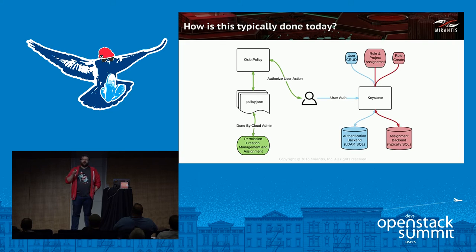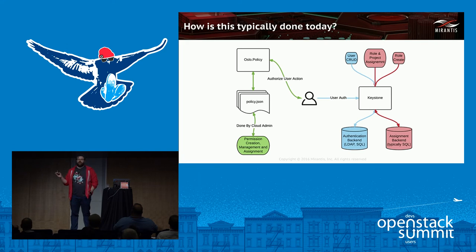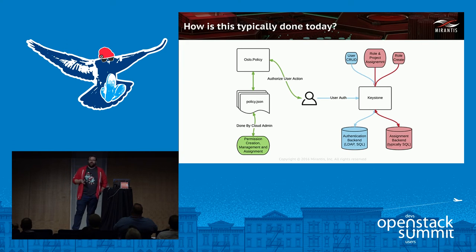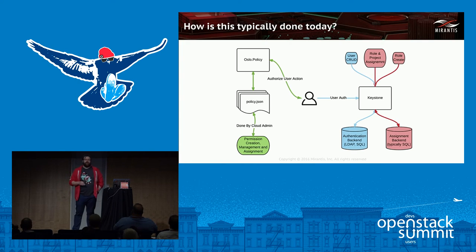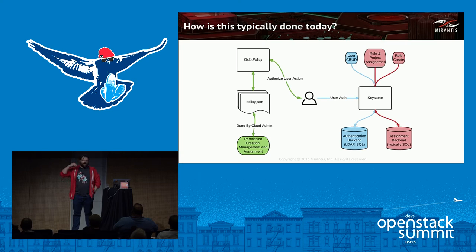If you've got 10 Nova API instances running, you have 10 policy.json files. Currently there is no single store for that — it's all available only as policy files. The policy file is essentially like a set of firewall rules that the user is compared to, and it allows you to do certain things.